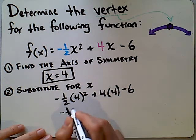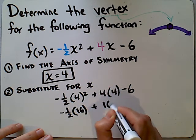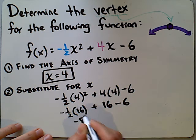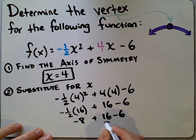That gets us to negative 1 half times 16. Plus we can make this a 16 as well. Minus 6 simplifying this gets us to negative 8. Plus 16 minus 6. That gets us to positive 8. Minus 6 and that gets us to 2.